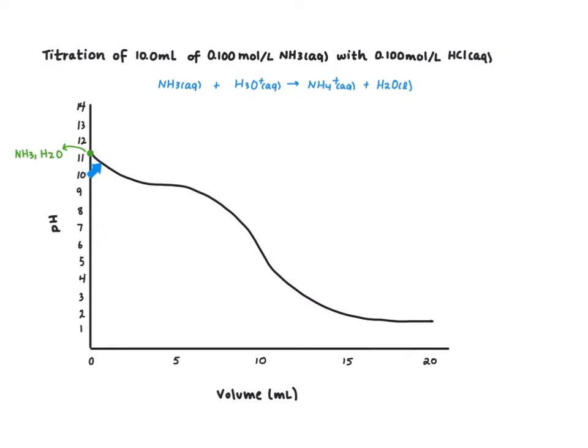As we start to add acid, we start to form ammonium. This dip is the initial formation of ammonium, and then we see the pH start to level out, and it levels out kind of centered around that half-equivalence point.